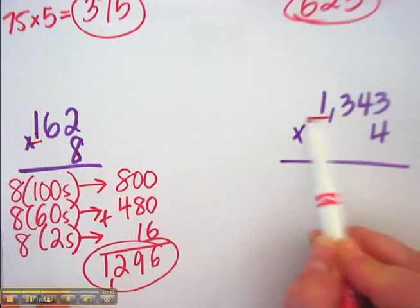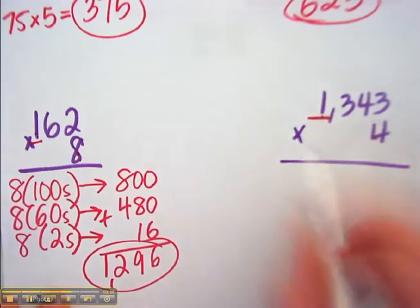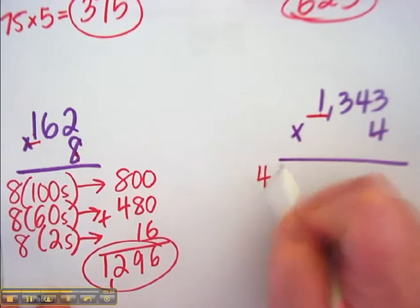It's just the first step would be the thousands place. So we look at the 4. The 1 is actually a thousand.